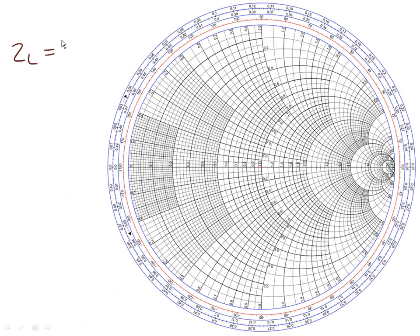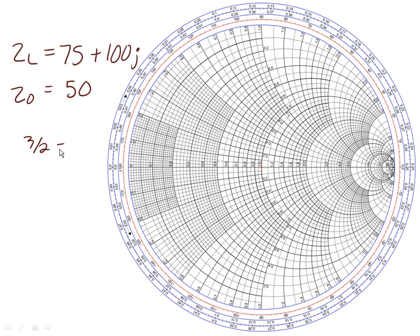Let's look at one more example. Z_load is equal to 75 plus 100j ohms, and Z_0 is equal to 50 ohms. Simply by doing this math, we get 3 over 2 plus 2j. So again, we move on our Smith chart until we find a value of 1.5 in the positive real direction, which turns out to be right here. We also find where positive 2 is. We draw this line over this way and follow it in, then draw this line over this way and follow it in. This point right here is how we'd represent a load impedance of 75 plus 100j if the line impedance was 50 ohms.